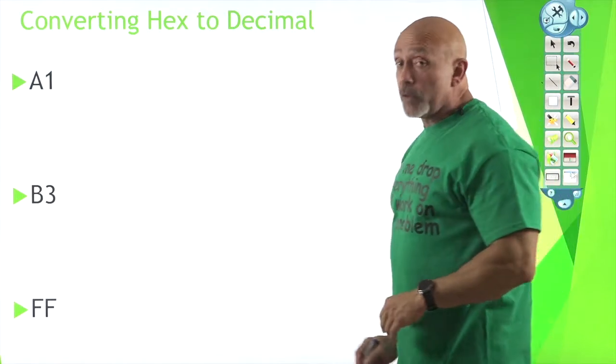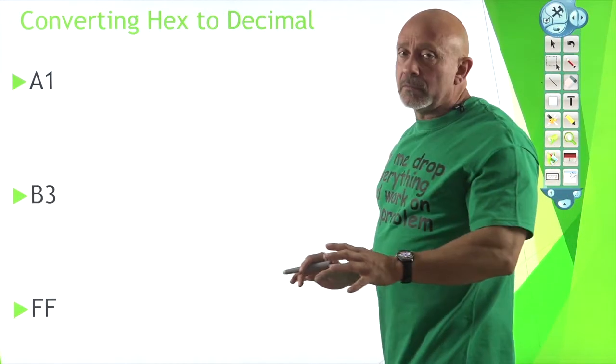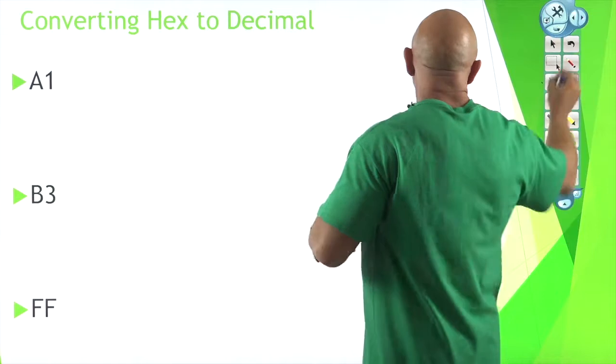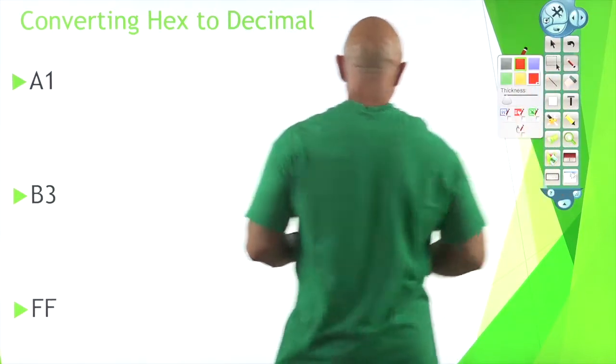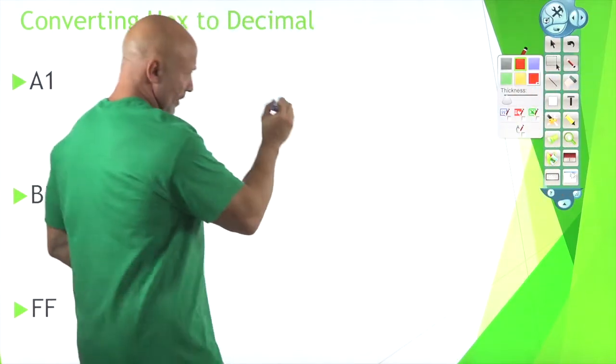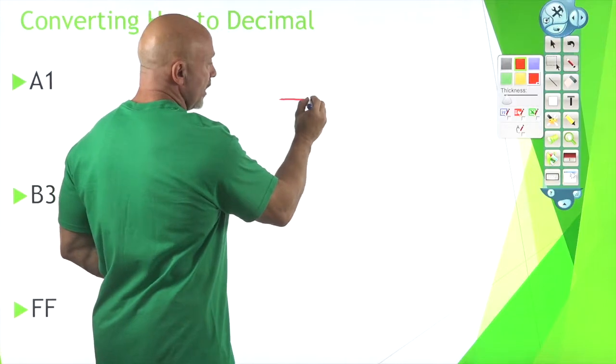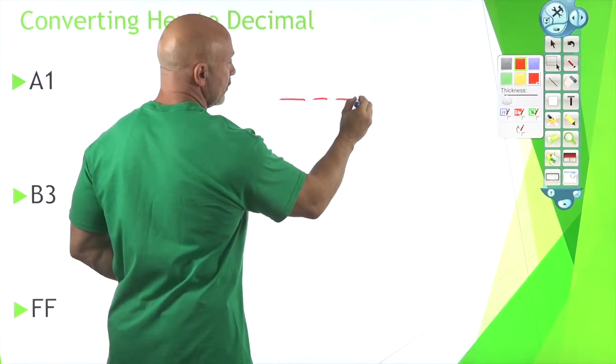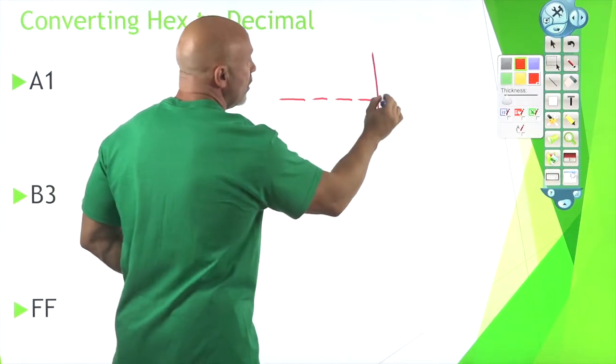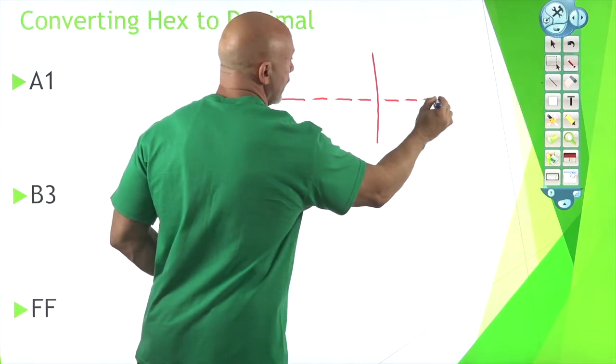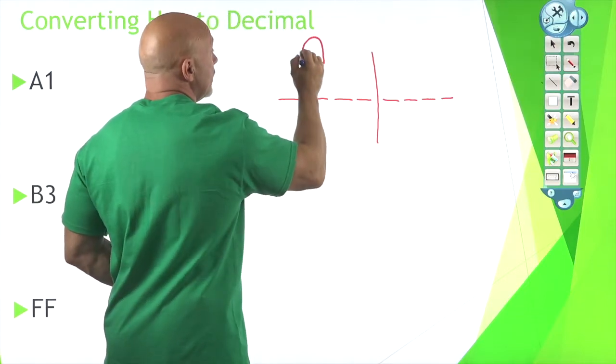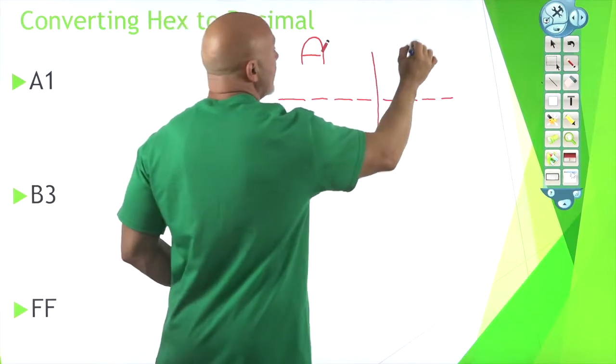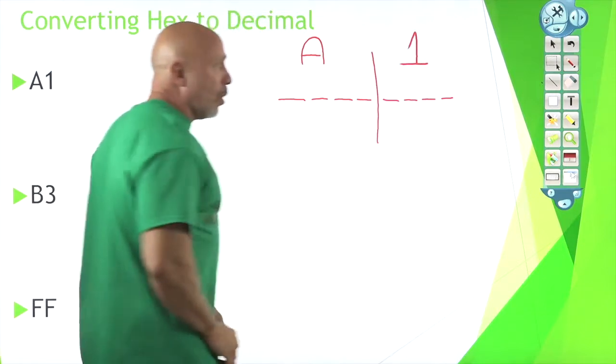We're going to go ahead and do A1 first. So we got to break it down, right? Each one is four bits long. Let's get our red pencil. So we're gonna go one, two, three, four line, one, two, three, four.